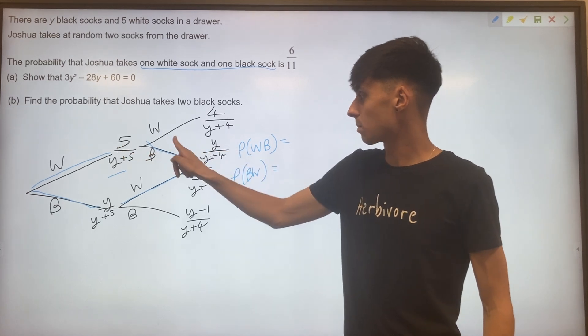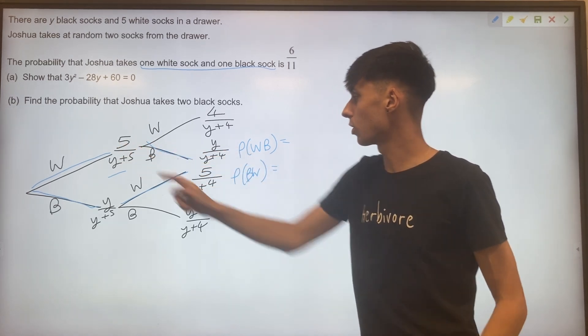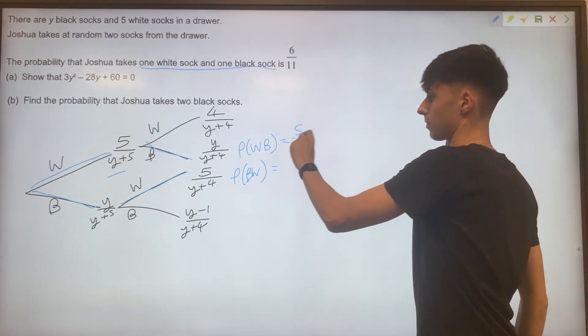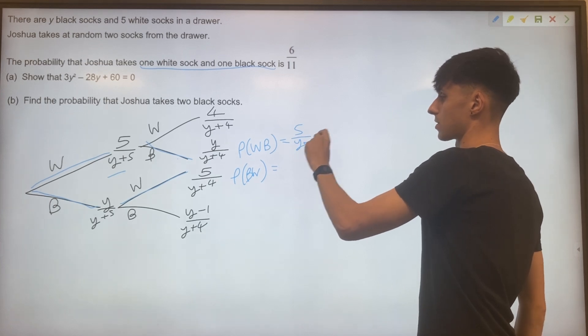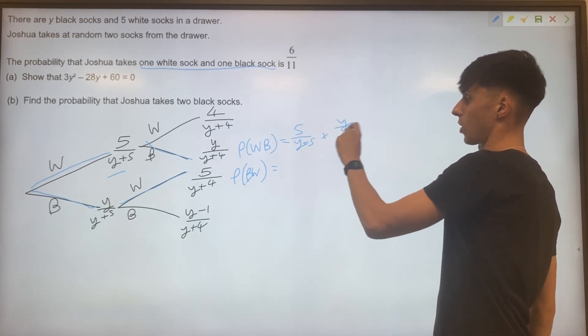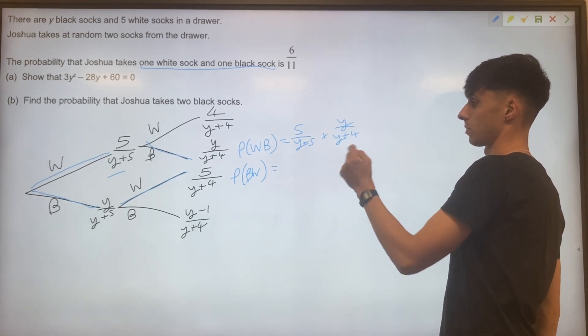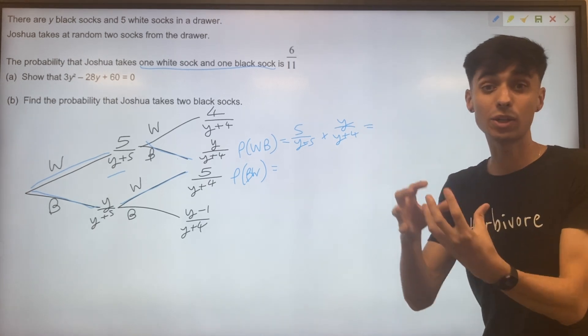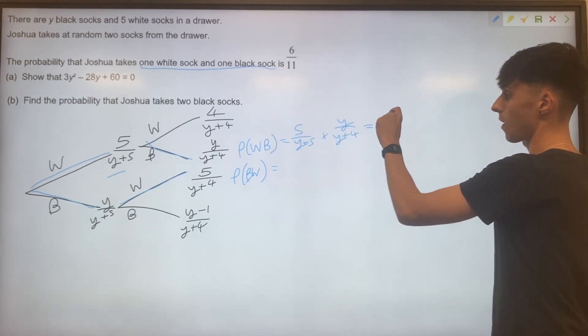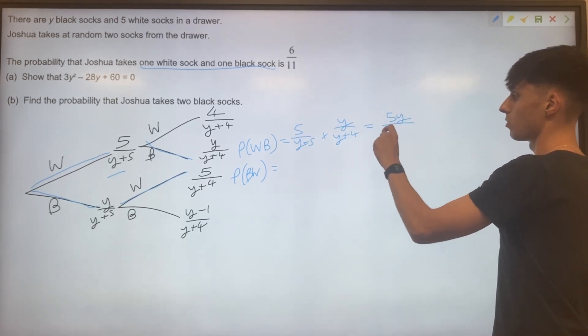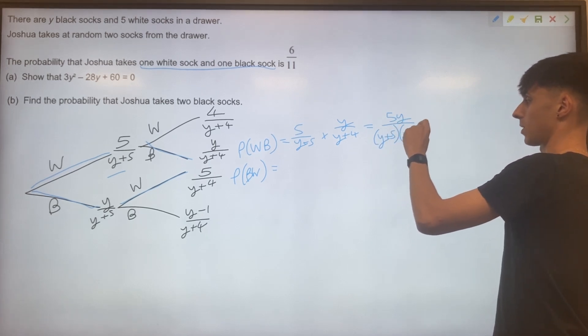Let's look at probabilities then for each of those. For our white black, we've got five over y plus five times y over y plus four. So combining those into one fraction,